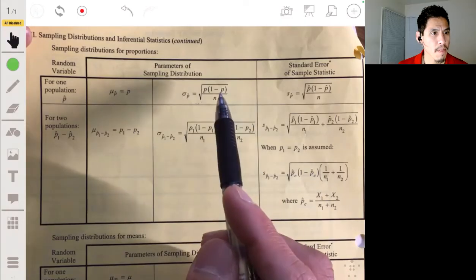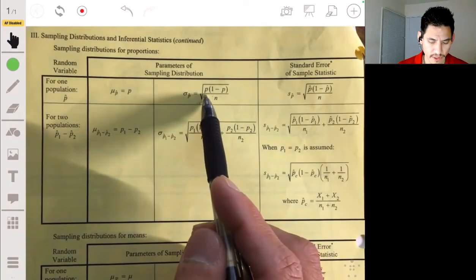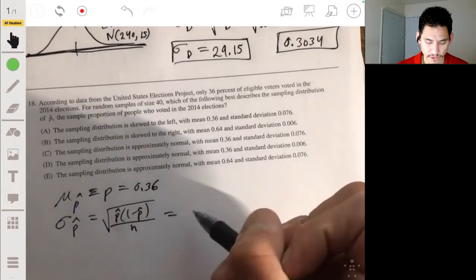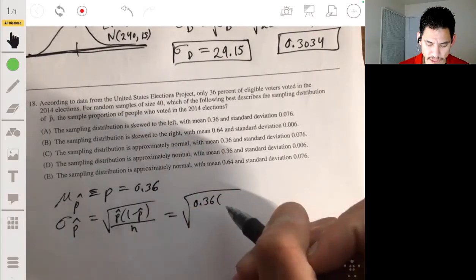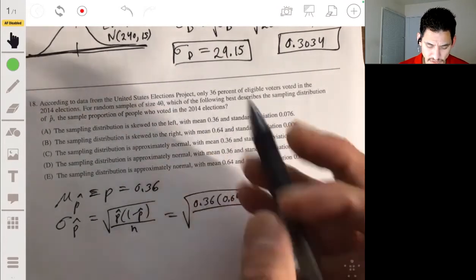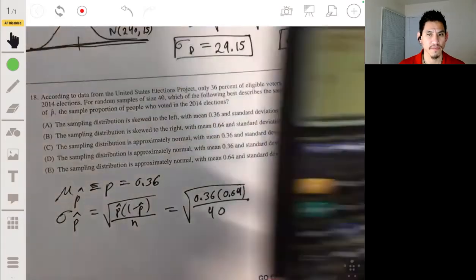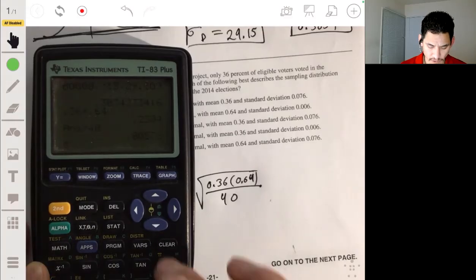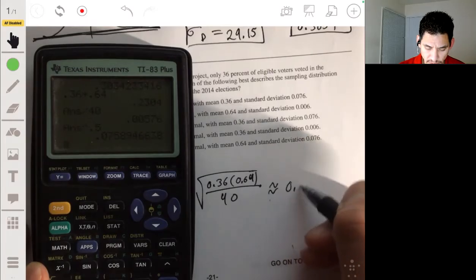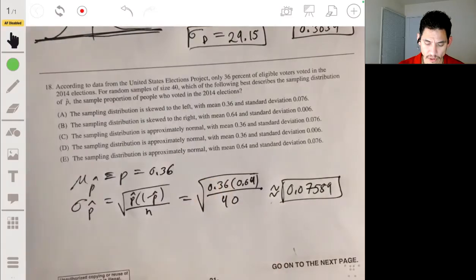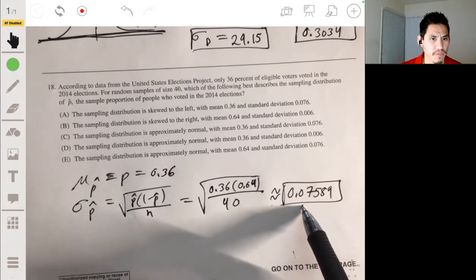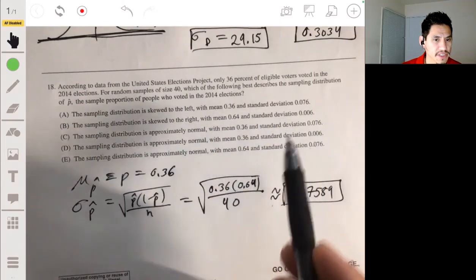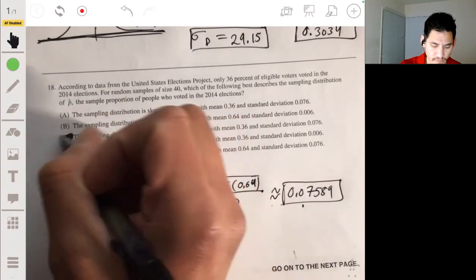So it'll be equal to the square root of p-hat times 1 minus p-hat over n. So this will be 0.36, 1 minus 0.36 is 0.64. Sample size is 40 over the square root of, all that square root of n is 40. But using our calculator again, 0.36 times 0.64 divided by 40 to the 0.5 power, the standard deviation is 0.07589. So let's see which one matches up. So the standard deviation, approximately normal, mean 0.36, standard deviation of 0.076. So the answer is C. Alright.